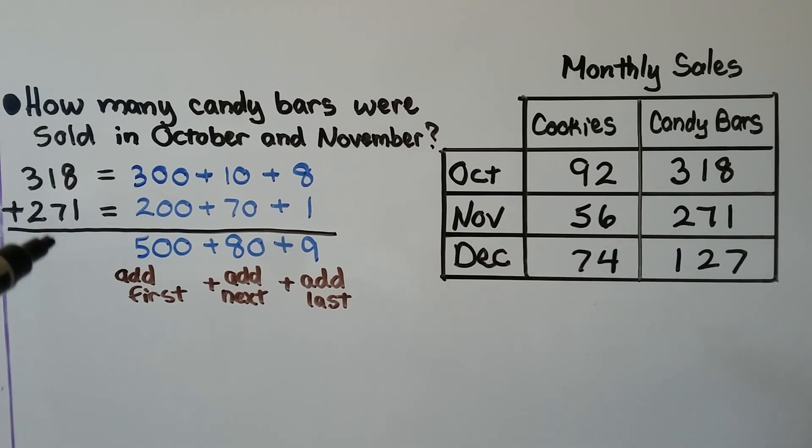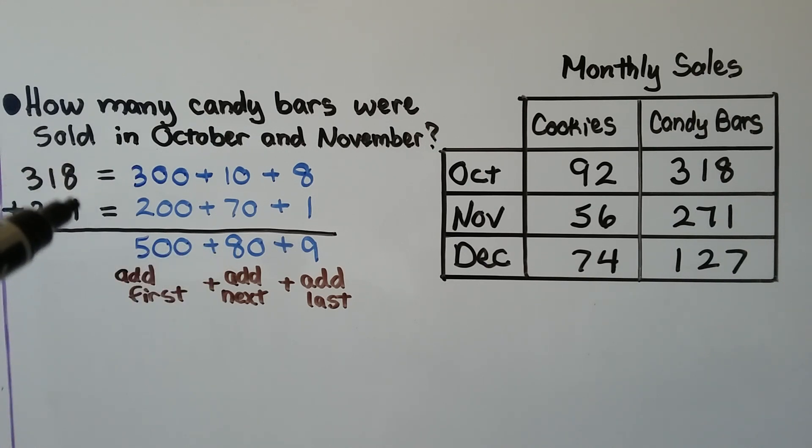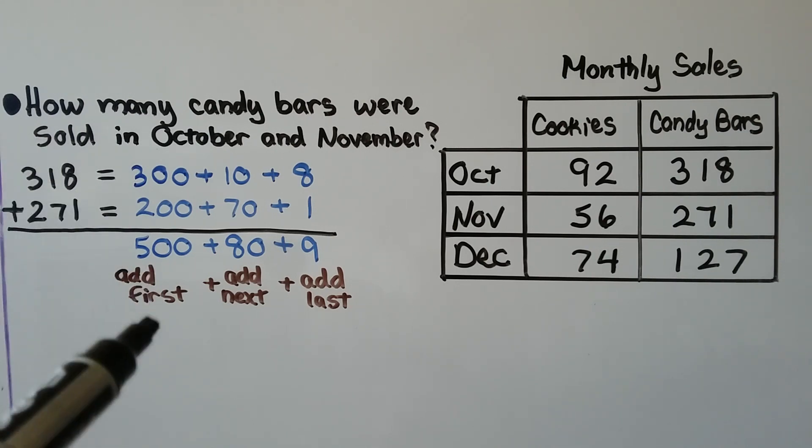For mental math, we would add the 300 plus the 200 and get 500. Then we would add the 10 and the 70 and get an 80. Then we would add the 1 and the 8 and get a 9. That would be 589. We started with the largest place value because we're trying to do it in our head.